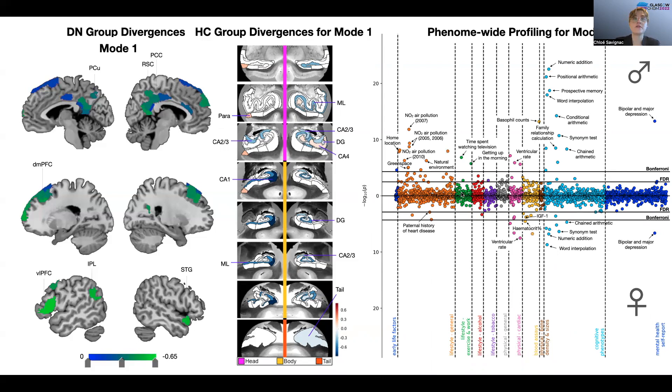So in males, we observe a lot of hits related to environmental qualities such as NO2 air pollution and quality of green space and natural environment in the vicinity. We also observe some hits related to verbal numerical reasoning. In females, we show some cognitive hits as well, but not to the same extent as in males. We rather observe some hits related to cardiovascular processing.